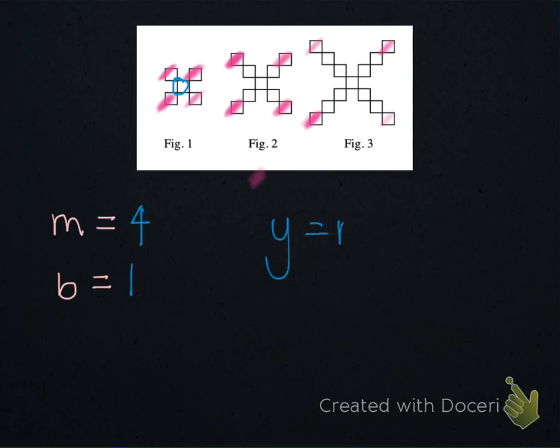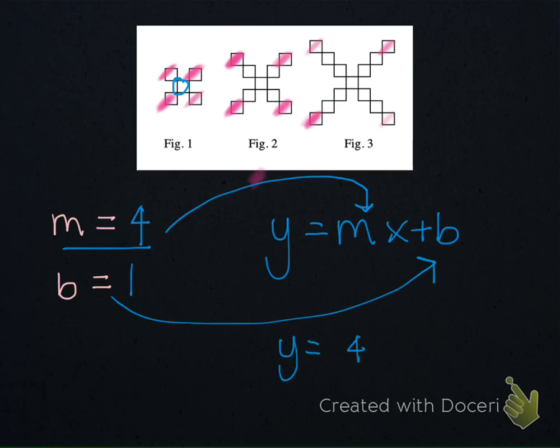So once again, y equals mx plus b is the equation or the rule for a linear pattern. I'm going to substitute the 4 in for the m for the growth, and the 1 in for the b for the number of tiles in figure 0. My equation becomes y equals 4x plus 1, and just like last time, we're going to go ahead and check it.